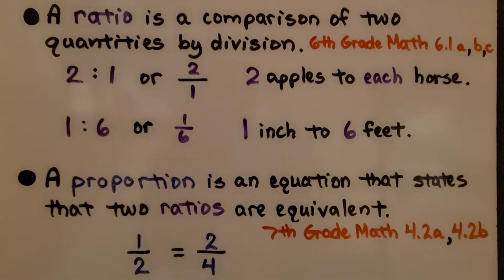A proportion is an equation that states that two ratios are equivalent. We learned this back in Module 4 in 7th grade math. So we have a proportion of 1 half is equal to 2 fourths. They're in proportion to each other.